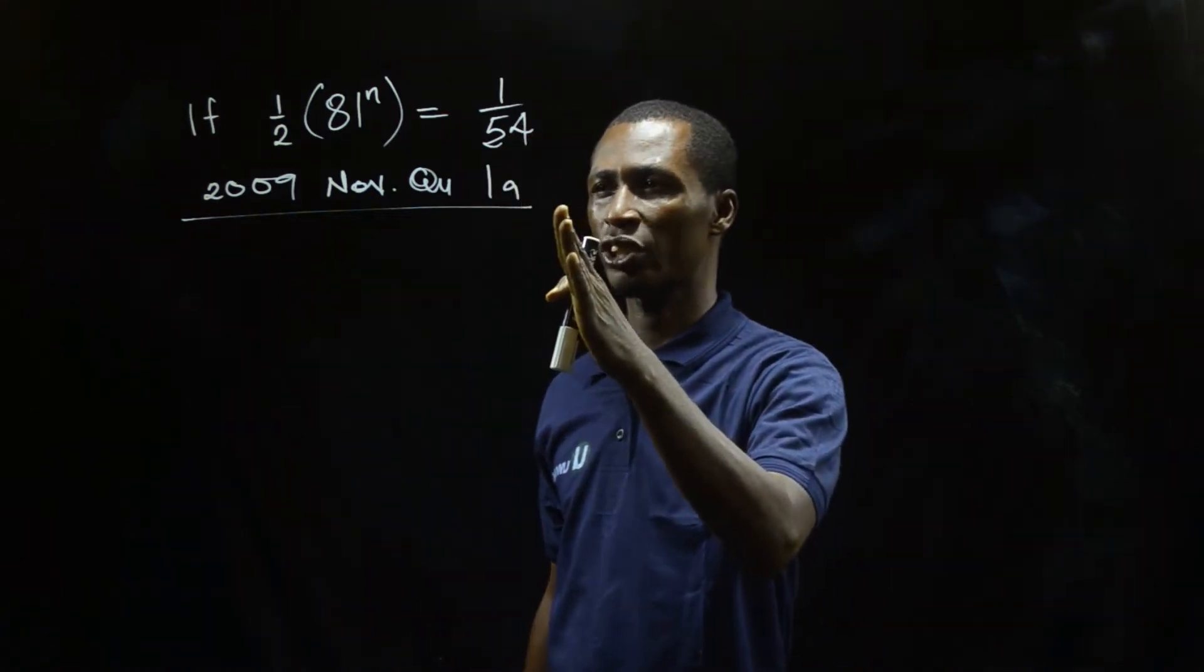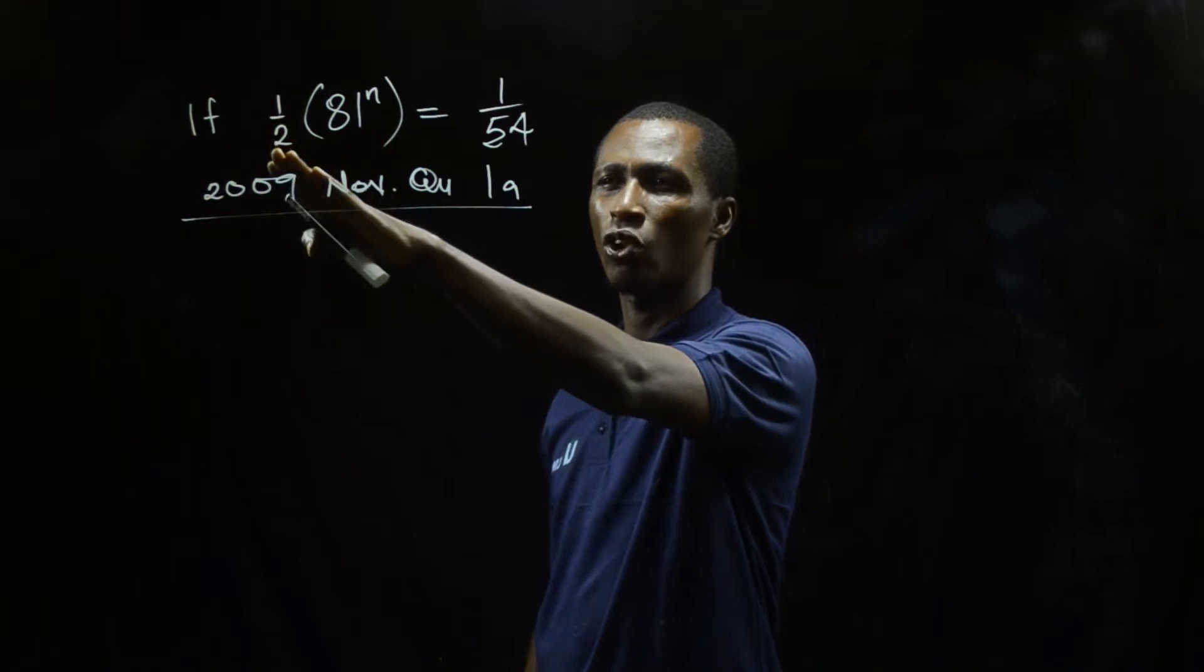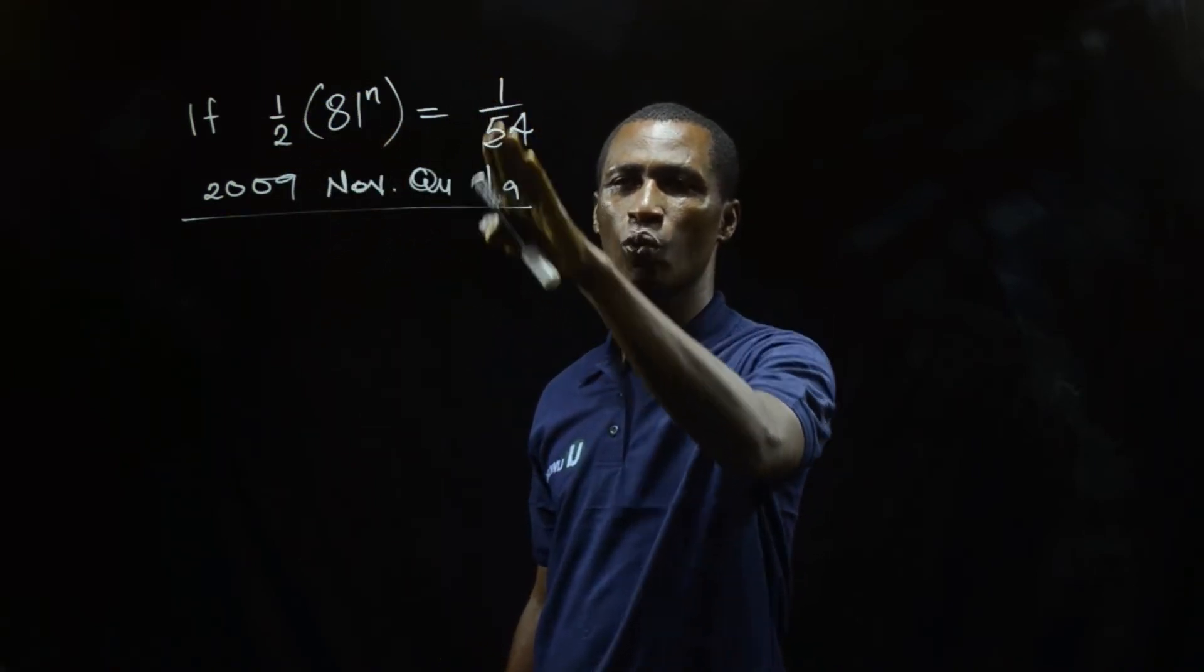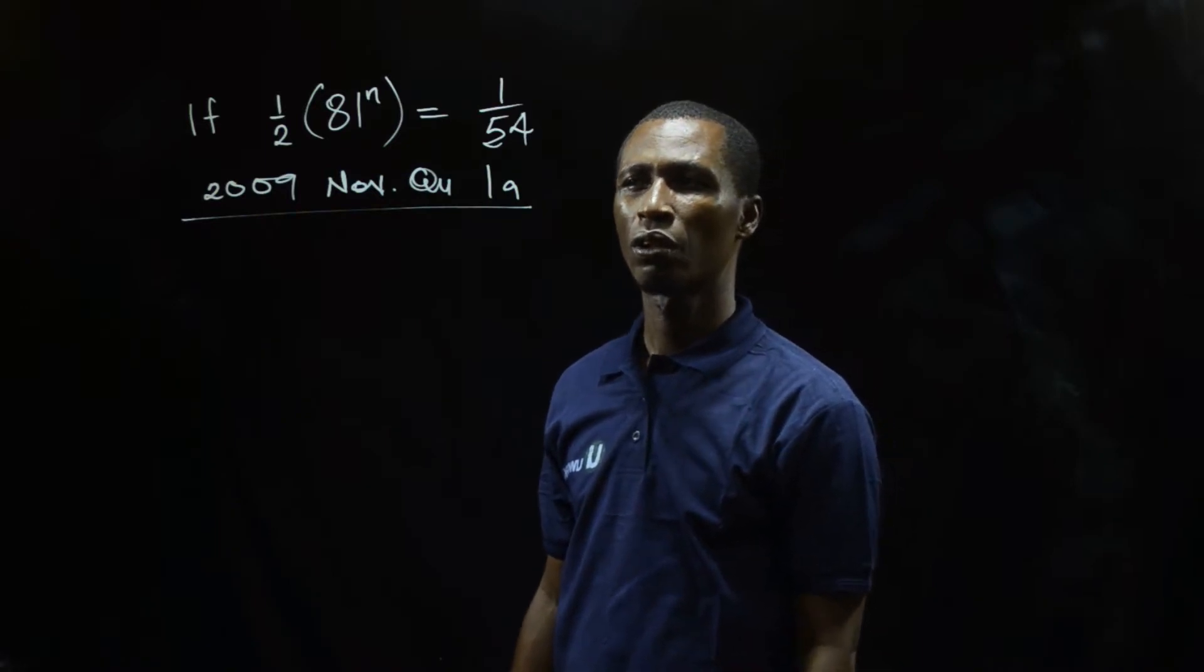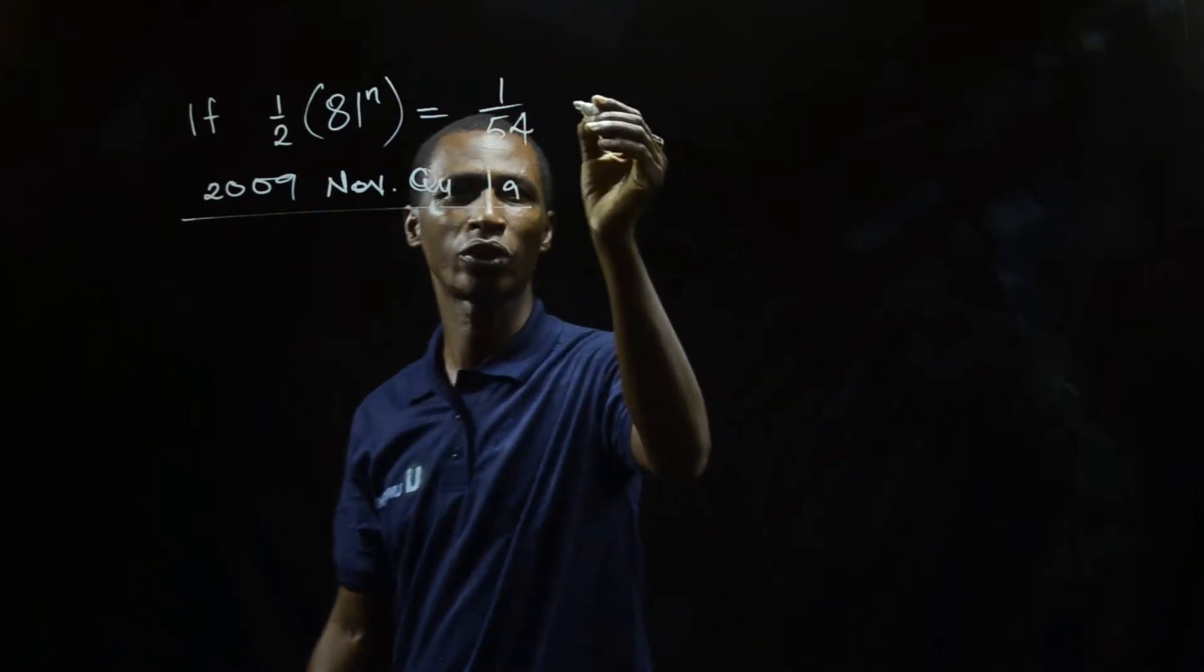As you can see, this is the second question. This is a 2009 question, and it reads: if 1/2 times 81 to the power n equals 1/54, you are supposed to solve for the value of n. Let me include that one, solve for n.